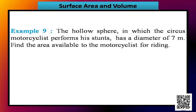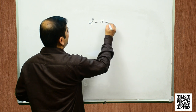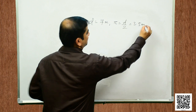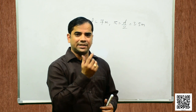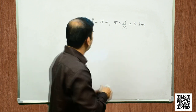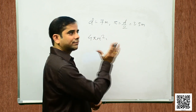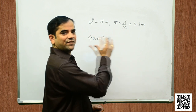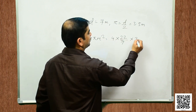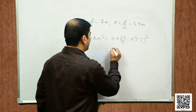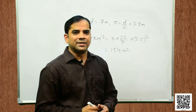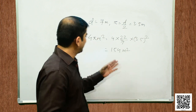Let us now discuss example 9. A hollow sphere in which a circus motorcyclist performs his turns has a diameter of 7 meters. Find the area available to the motorcyclist for riding. Diameter = 7 meters, so r = d/2 = 3.5 meters. The riding space available is the surface area of the sphere = 4 π r² = 4 × 22/7 × 3.5² = 154 square meters. So the area available to the motorcyclist for riding is 154 square meters.